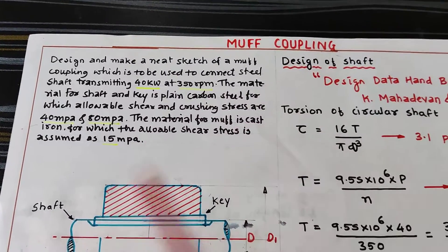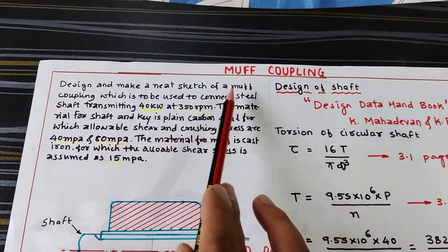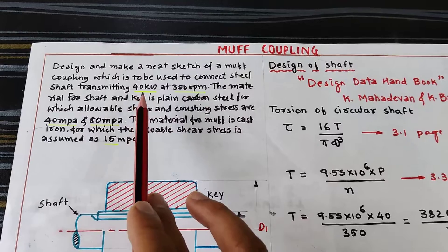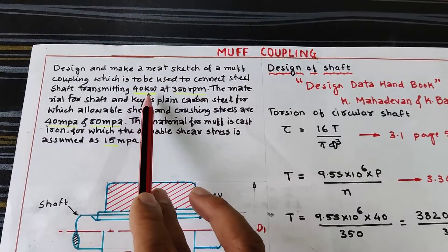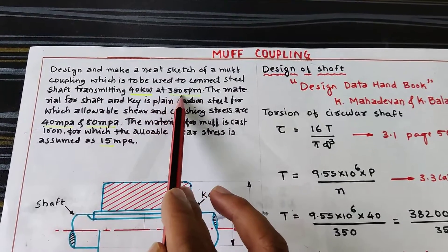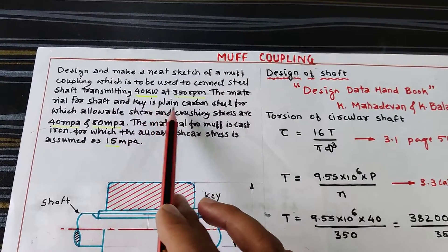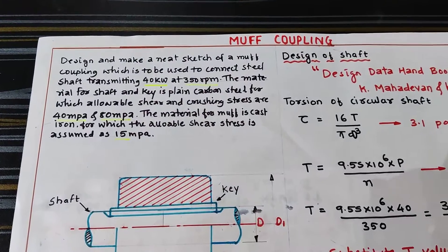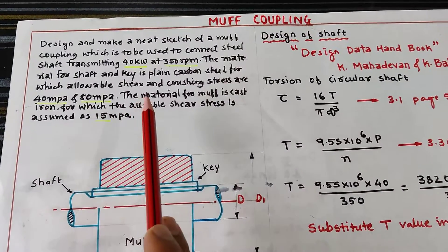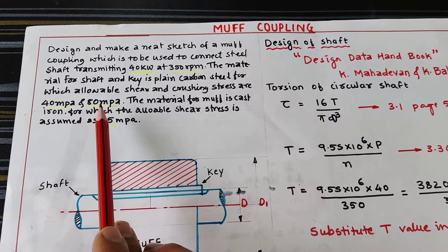Let's start with the problem. Design and make a neat sketch of a MUF coupling which is to be used to connect a steel shaft transmitting 40 kW of power to another shaft rotating at 350 rpm. The material for the shaft and key is plain carbon steel, for which the allowable shear stress and crushing stress are 40 MPa and 80 MPa respectively.